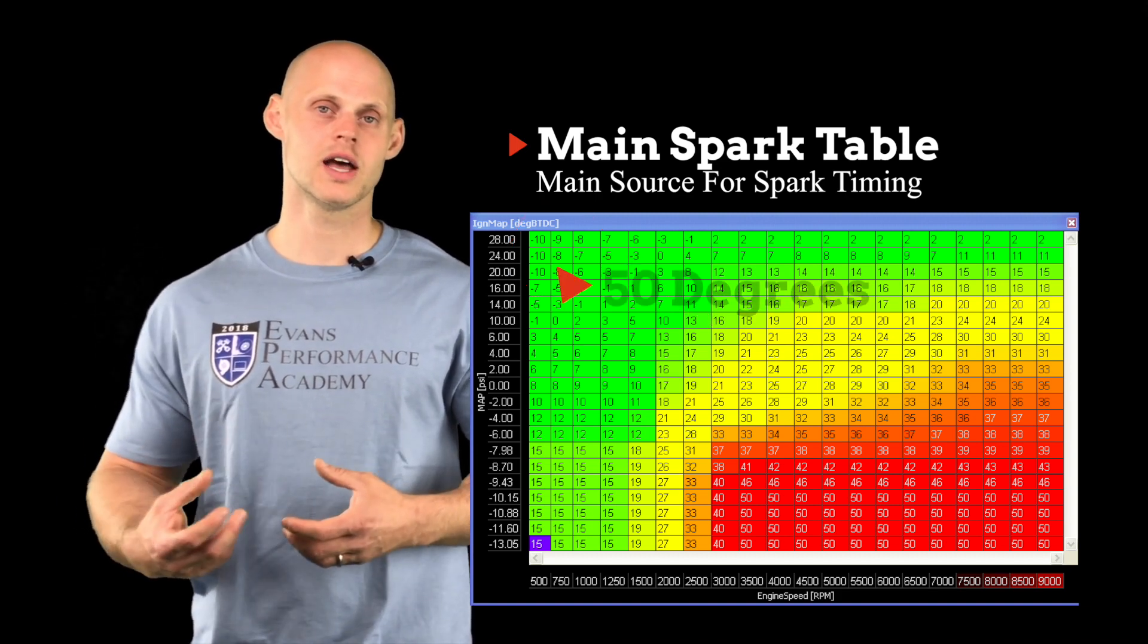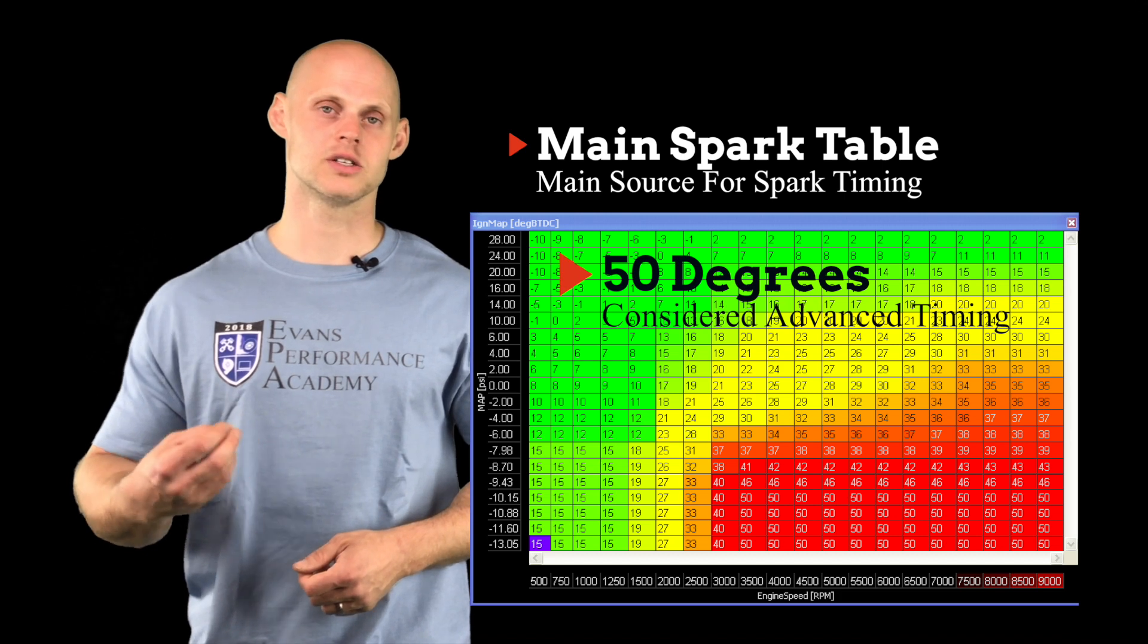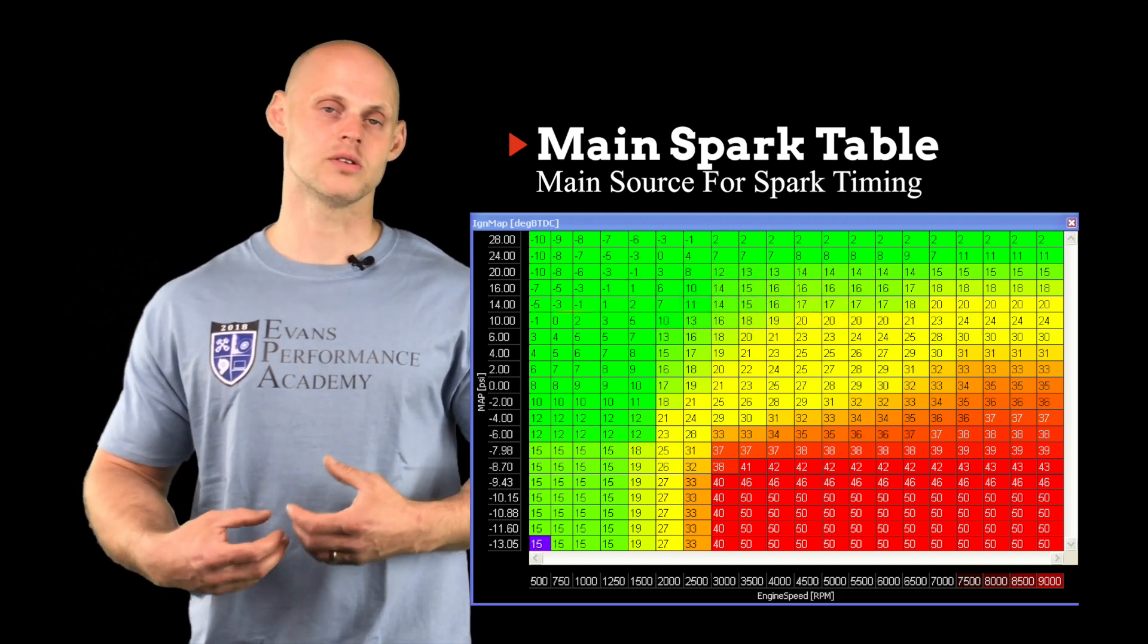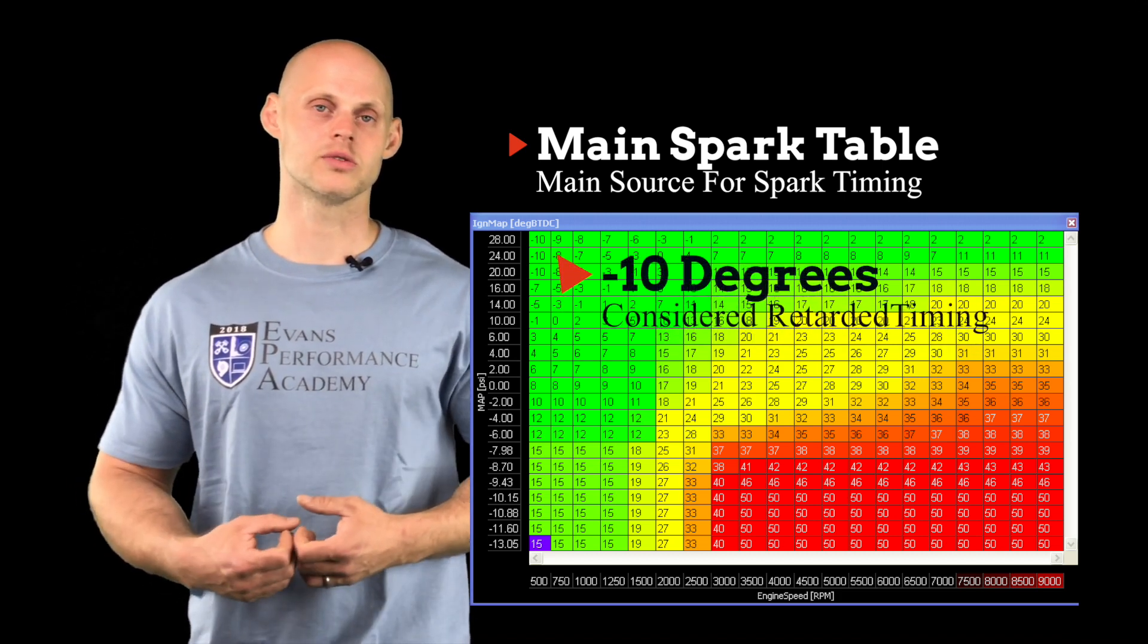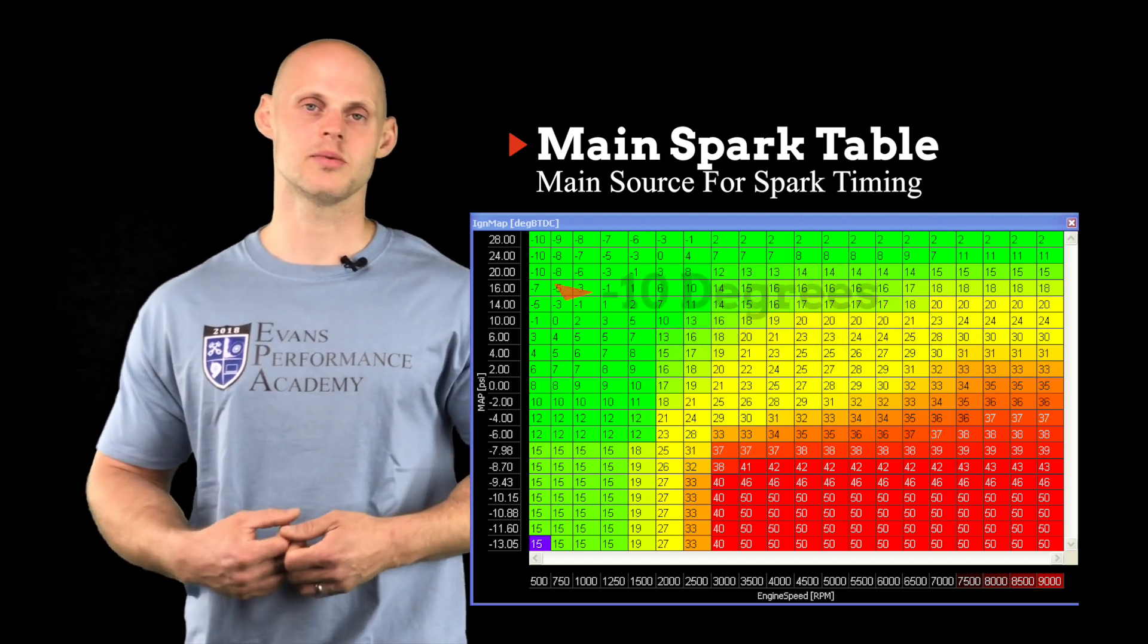So we have a value of 50 degrees, that's going to be considered advanced ignition timing. And if we have a value of zero or negative 10 degrees, that's going to be considered late or retarded ignition timing.